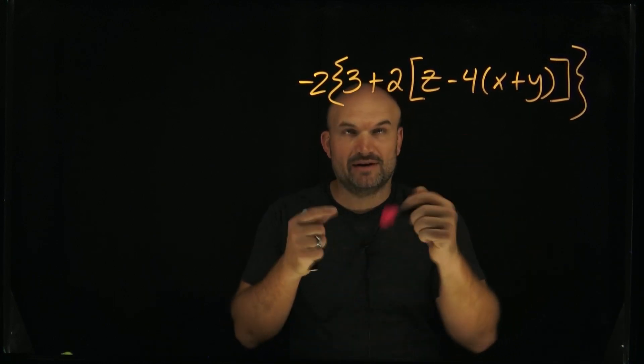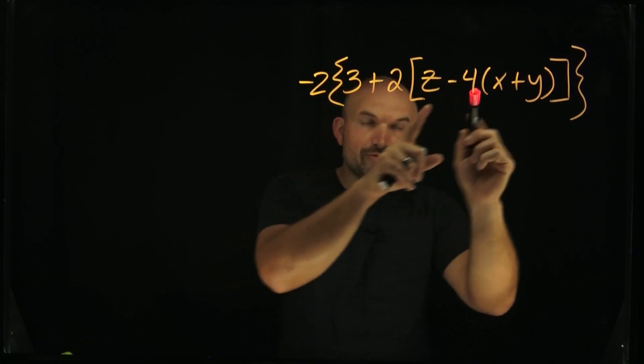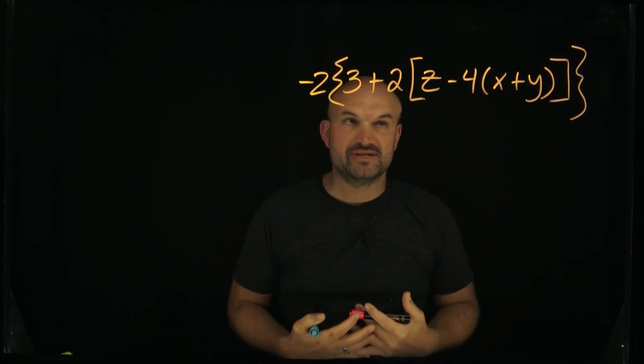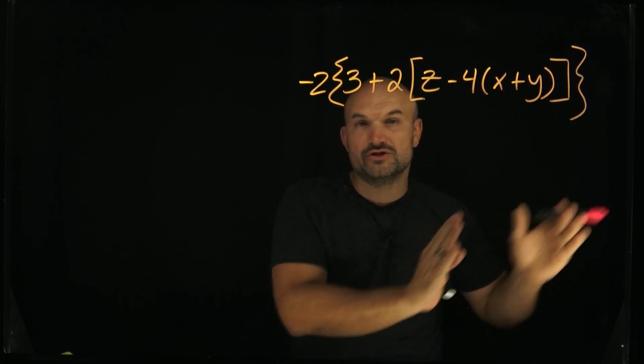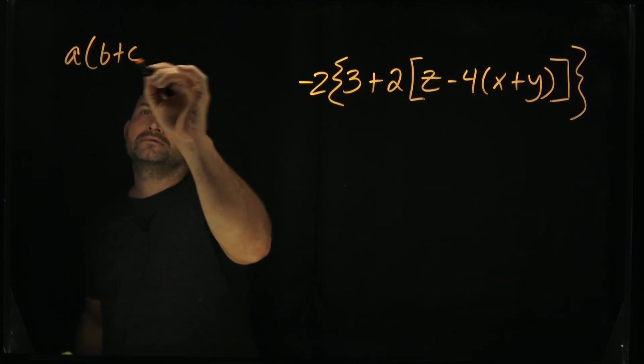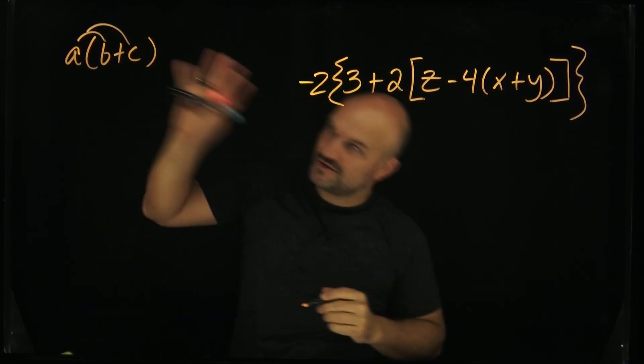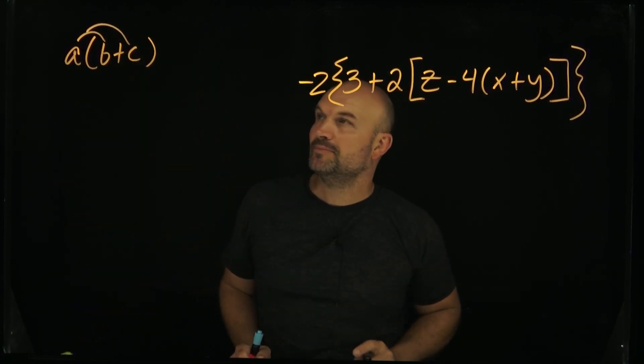One thing we recognize is whenever we have a number right next to a bracket or parentheses, that operation represents multiplication. We need to make sure that we take that term and multiply it to every single term inside of those parentheses. So there's your basic definition of the distributive property.